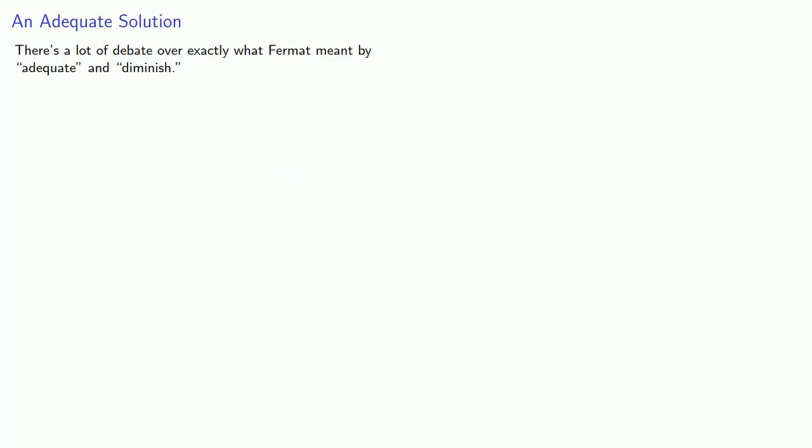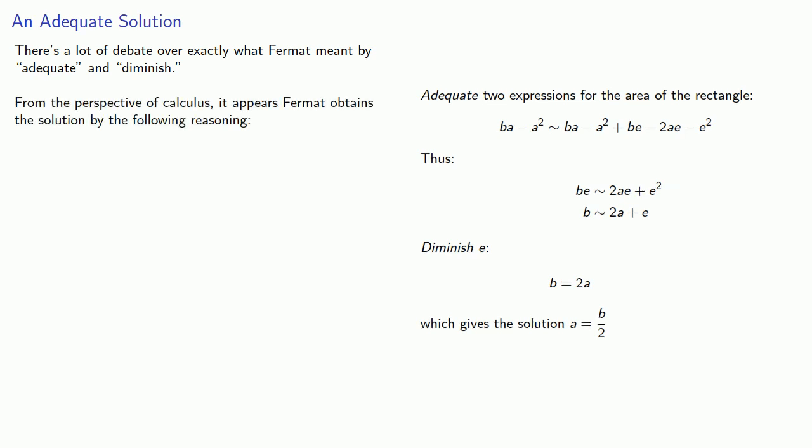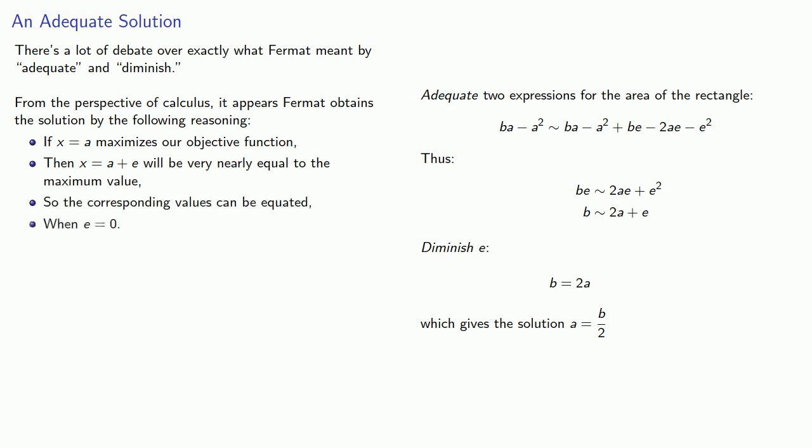There's a lot of debate over exactly what Fermat meant by adequate and diminish. Let's take a look at Fermat's work again. Now, viewed from the perspective of calculus, it appears Fermat obtains the solution by the following reasoning. If x equals a maximizes our objective function, then x equals a plus e will be very nearly equal to the maximum value. And that's one of the meanings of this word adequate in Diophantus. And so the two values can be equated when e is equal to zero. And so it's possible to view Fermat's work as a precursor to calculus.